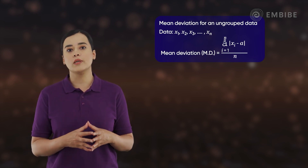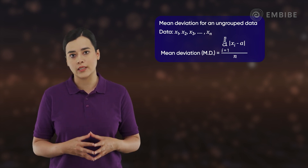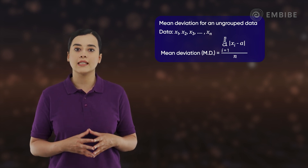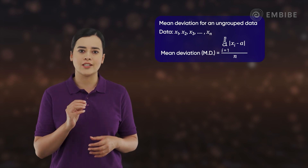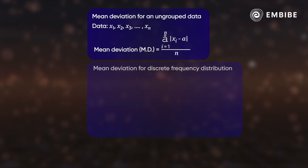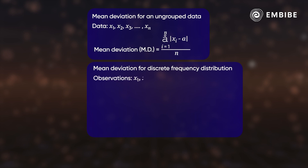Now let's see how mean deviation is calculated for a discrete frequency distribution. The steps involved are similar except for a small change in the formula. The mean deviation of a discrete frequency distribution is calculated as the summation of the product of frequency and deviation, divided by the sum of frequencies.